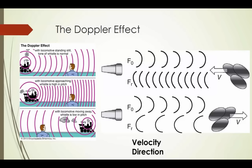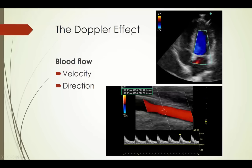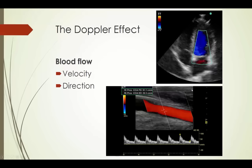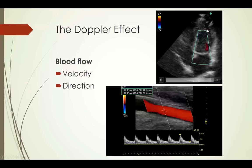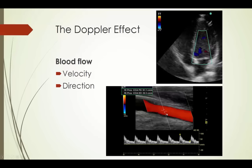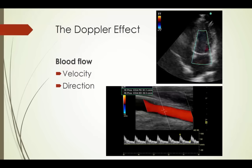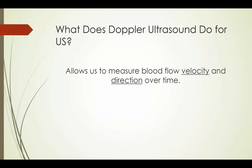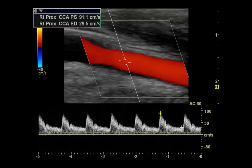Key words that repeat themselves tend to come up on exam questions. The Doppler effect allows us to measure blood flow direction and velocity over time. We have color Doppler, which gives us a rough estimate of flow direction and speed. What we're going to talk about a lot is spectral Doppler — where we use a small gate placed in an area of interest to get very specific information about velocity and direction.